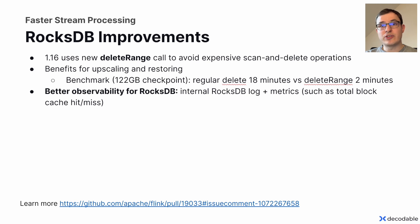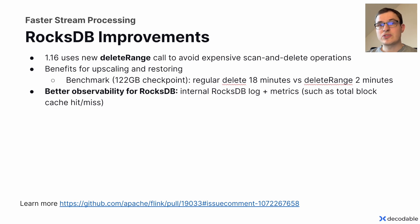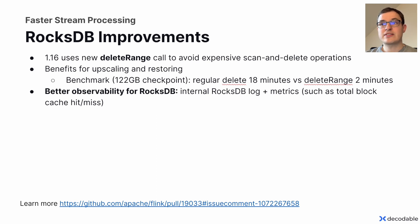We also made improvements to the RocksDB state backend. In Flink 1.16, we use a new delete range call to avoid expensive scan and delete operations. Benchmarks show that upscaling and restoring benefit most from this change: in a 122-gigabyte checkpoint, a regular delete took 18 minutes while delete range only took two minutes. We also improved observability for RocksDB by exposing the internal RocksDB log in Flink's task manager log directory and by adding more metrics such as cache hit-miss rates.